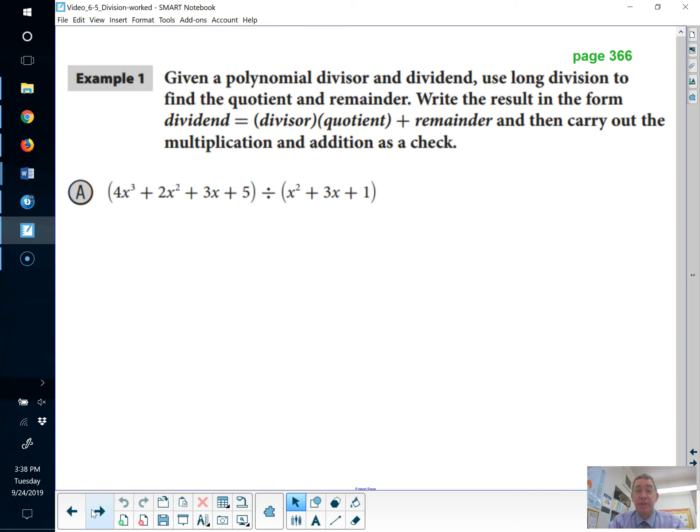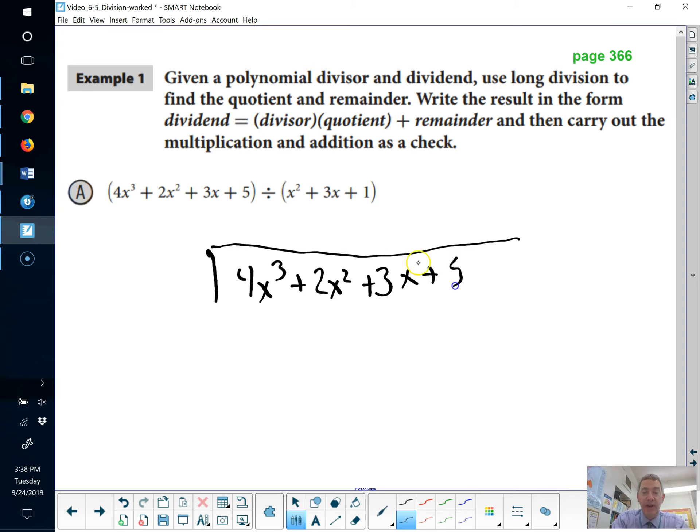Here's the example from page 366. The long division of polynomials looks just exactly like long division that you learn in fourth grade. Nice little bar here. Here, 4x cubed plus 2x squared plus 3x plus 5, divided by x squared plus 3x plus 1. There we go.